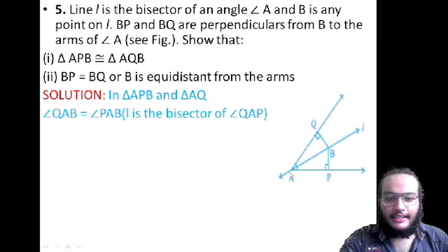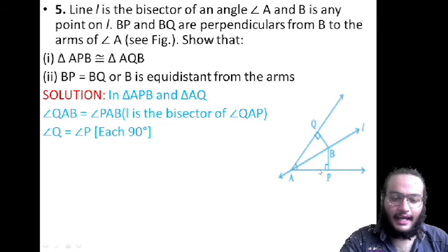Then angle AQB should be equal to angle APB because they both form 90 degrees, and AB is the common side between the triangles.